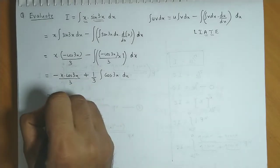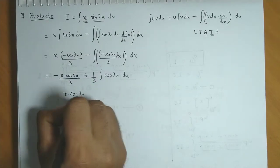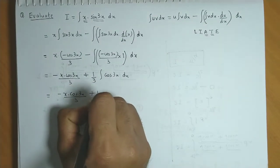So the next step is minus x times cos 3x upon 3, plus one by three.